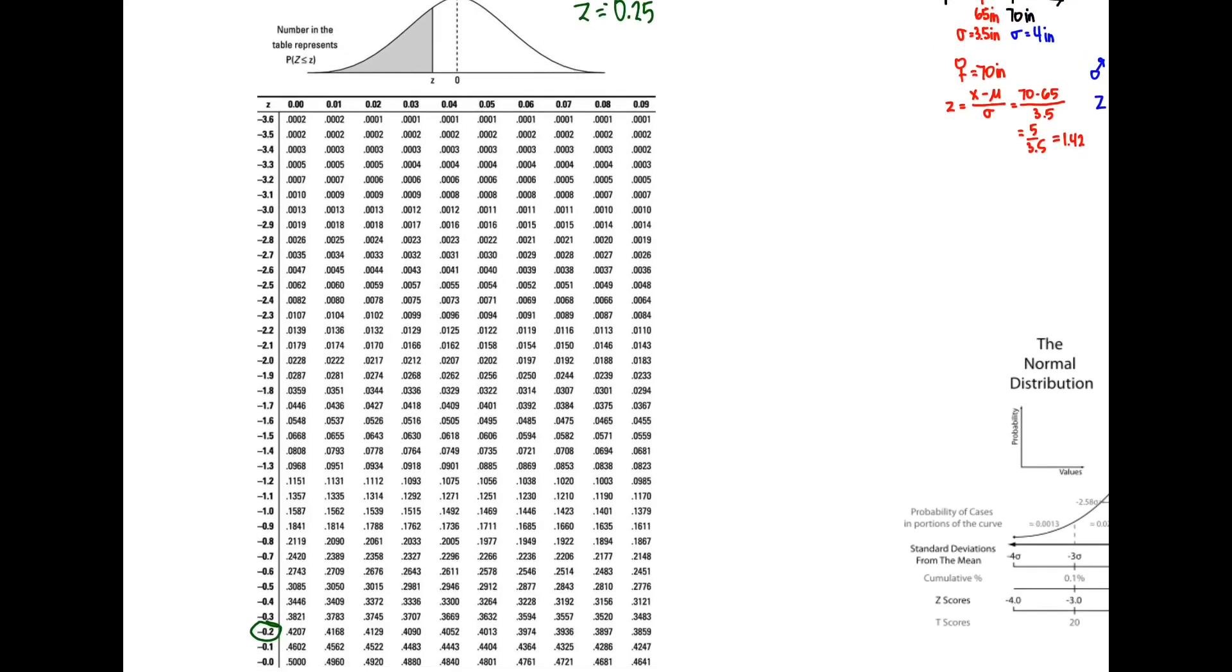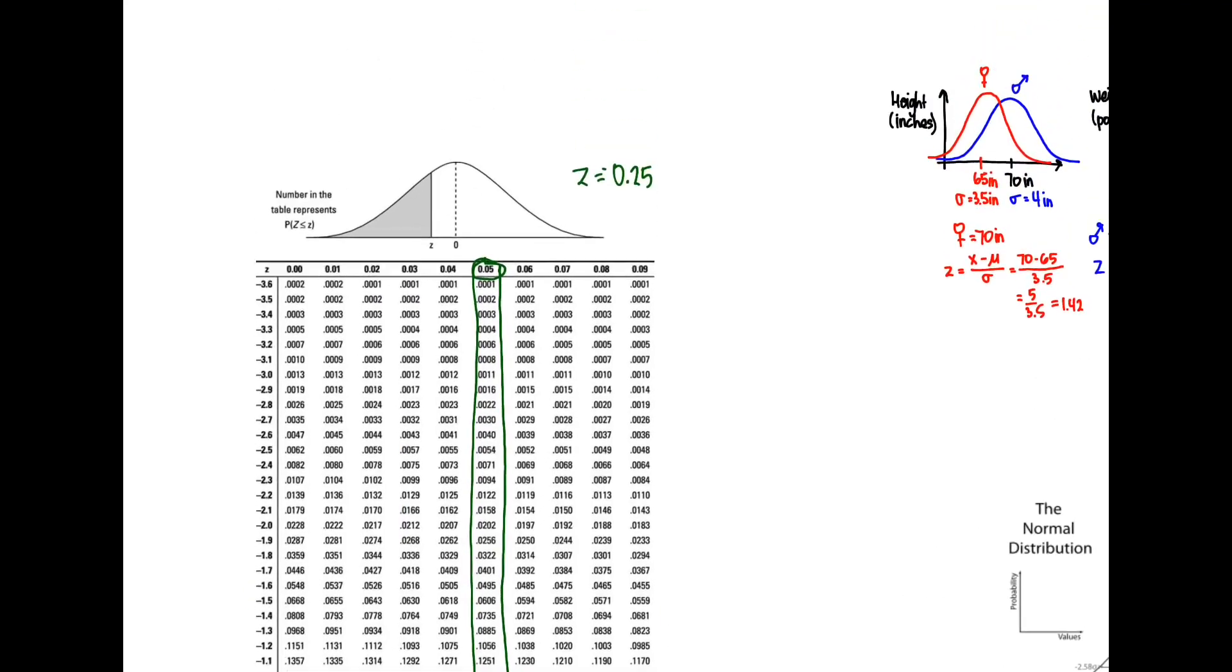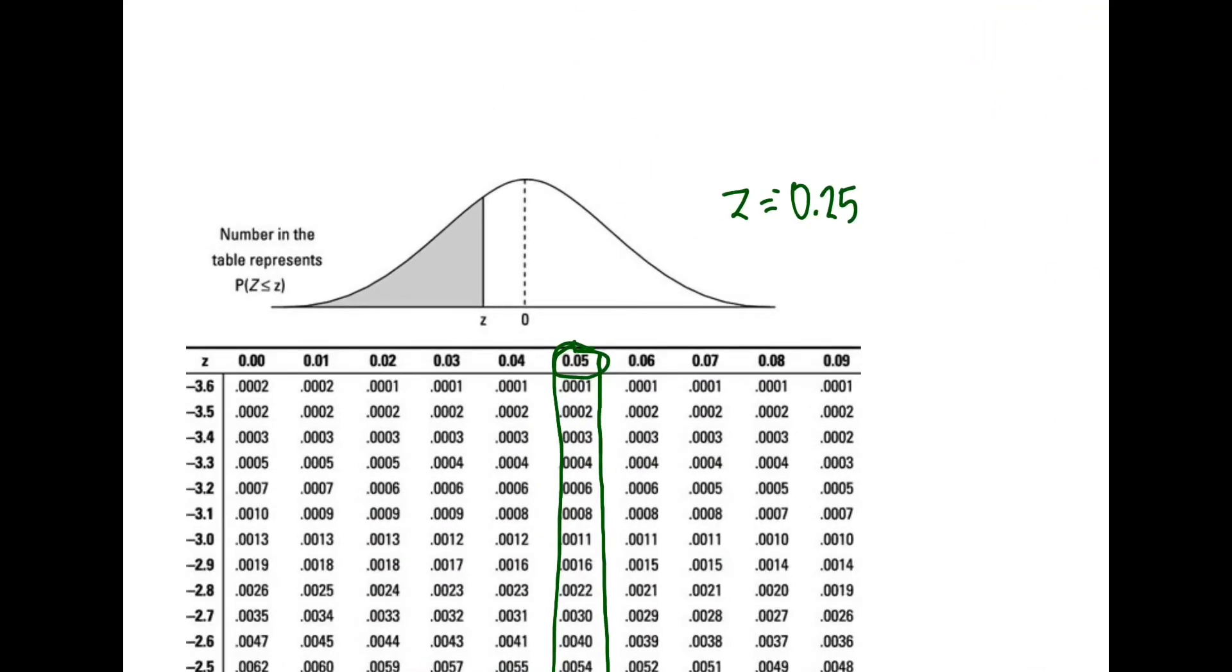So we're going to scroll down and we're going to say, okay, here's negative 0.2, right? And then we've got to find five. Okay, here, five. So negative 0.25 is going to be along here, where this and this cross. Now there are computer programs and even calculators that can do this now, but before calculators and stuff, this is the way we had to do it. And so we got 0.4013. That means that this area right here is 0.4013 or 40.13%, right?